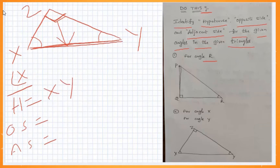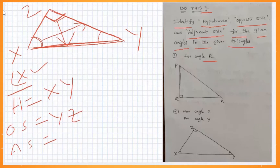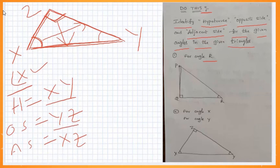For angle X, the opposite side is YZ. The adjacent side is XZ. The hypotenuse is XY. So for angle X: hypotenuse is XY, opposite side is YZ, and adjacent side is XZ.